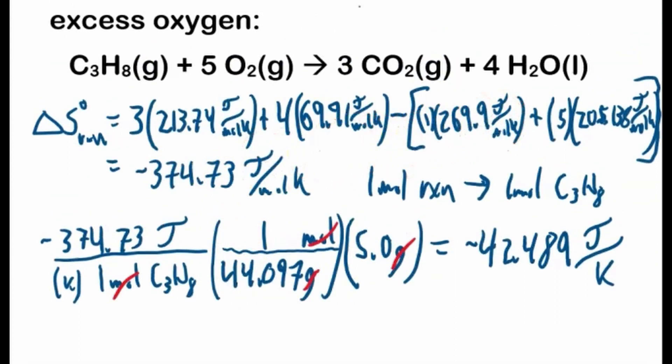And our significant figures, oh, we only have precision to one decimal place because of this, so we have one decimal place of precision. This is one decimal place, this is like a lot, three decimal places, so one decimal place, so that's all we have, so our final answer is negative 42.5 joules per kelvin.